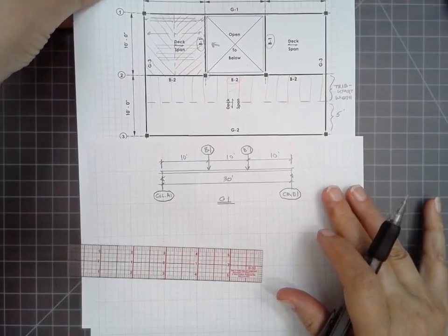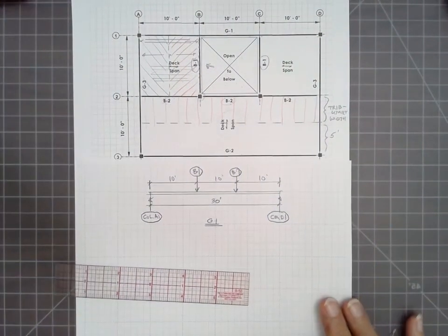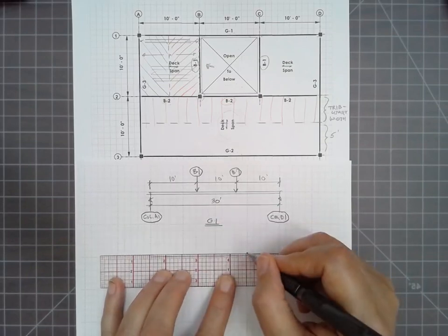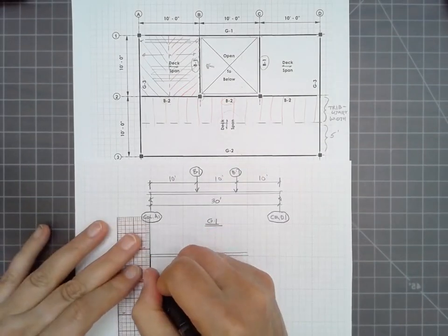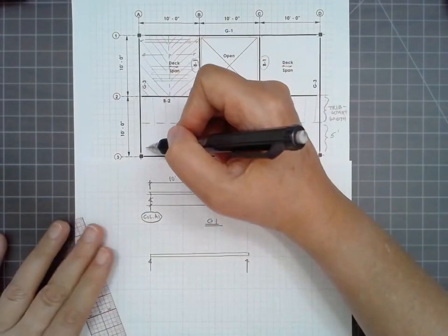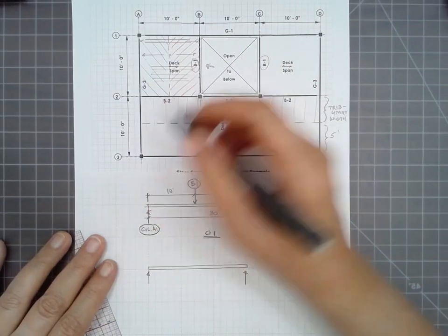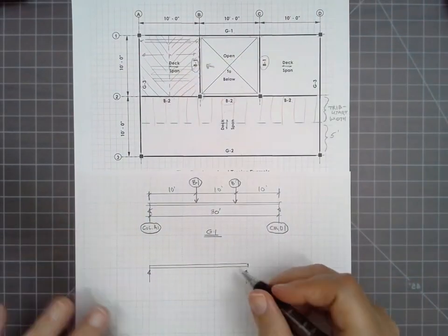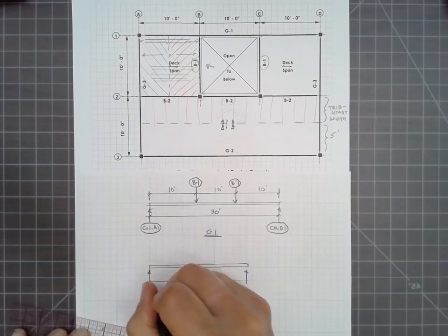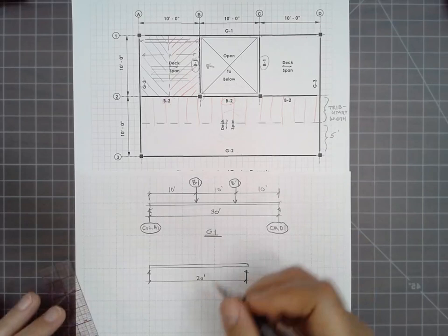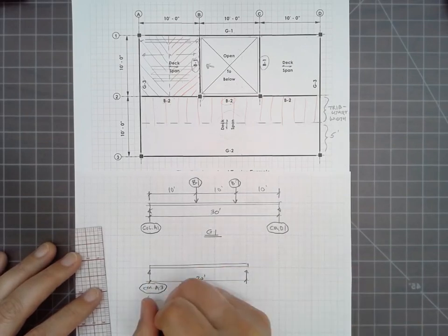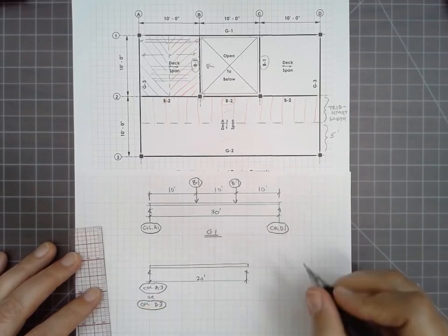The last member is G3. This is the one member that's different than all the others. So G3 is 20 feet long, a little bit shorter than the other girders, longer than the beams. One end of G3 is being supported by either column A3 or D3, depending on which we're talking about. And I'm looking in an elevation from the right to the left again. So the length here is 20 feet.